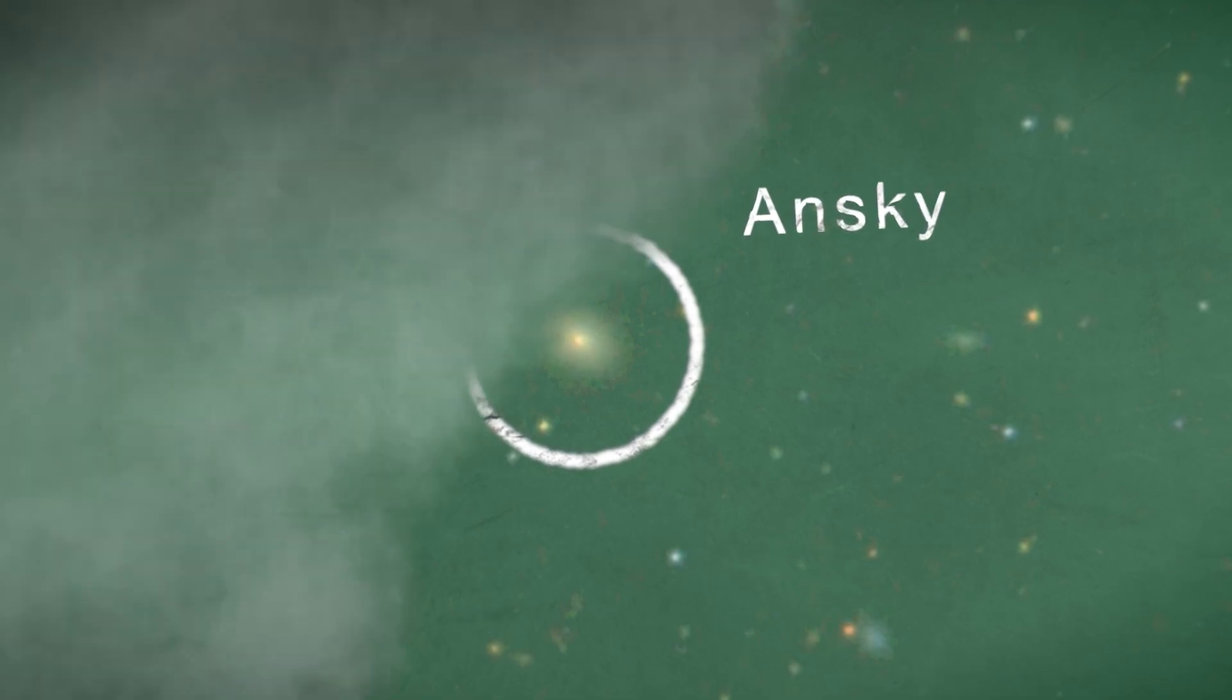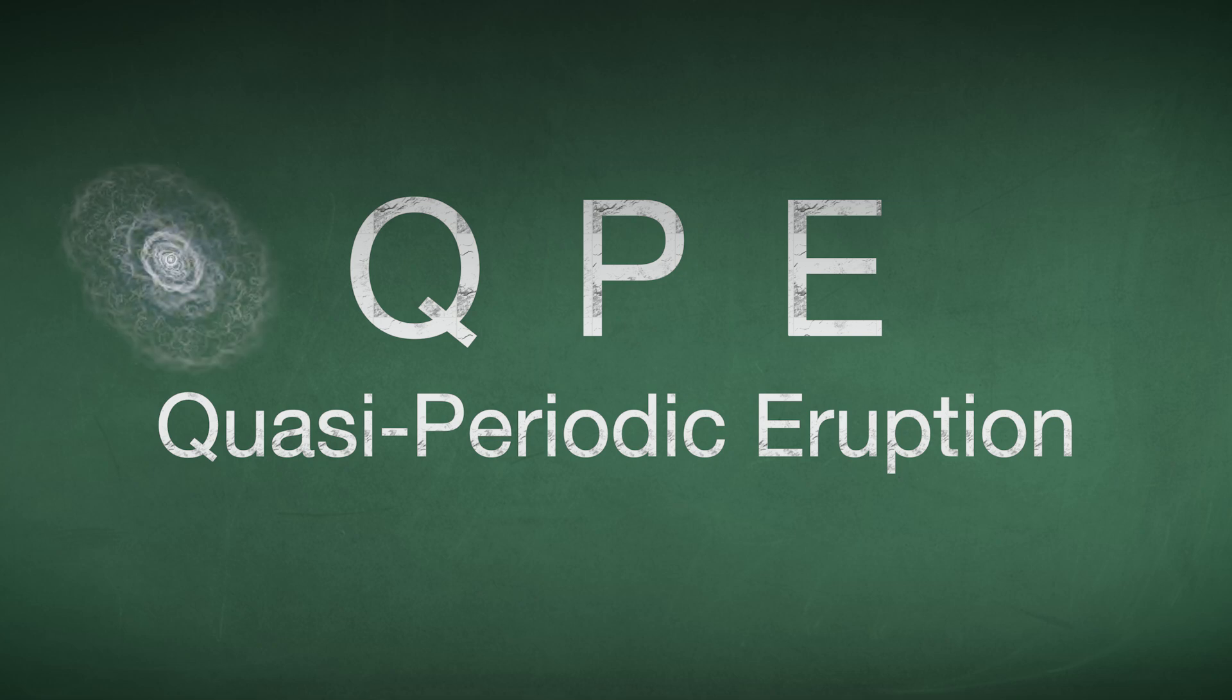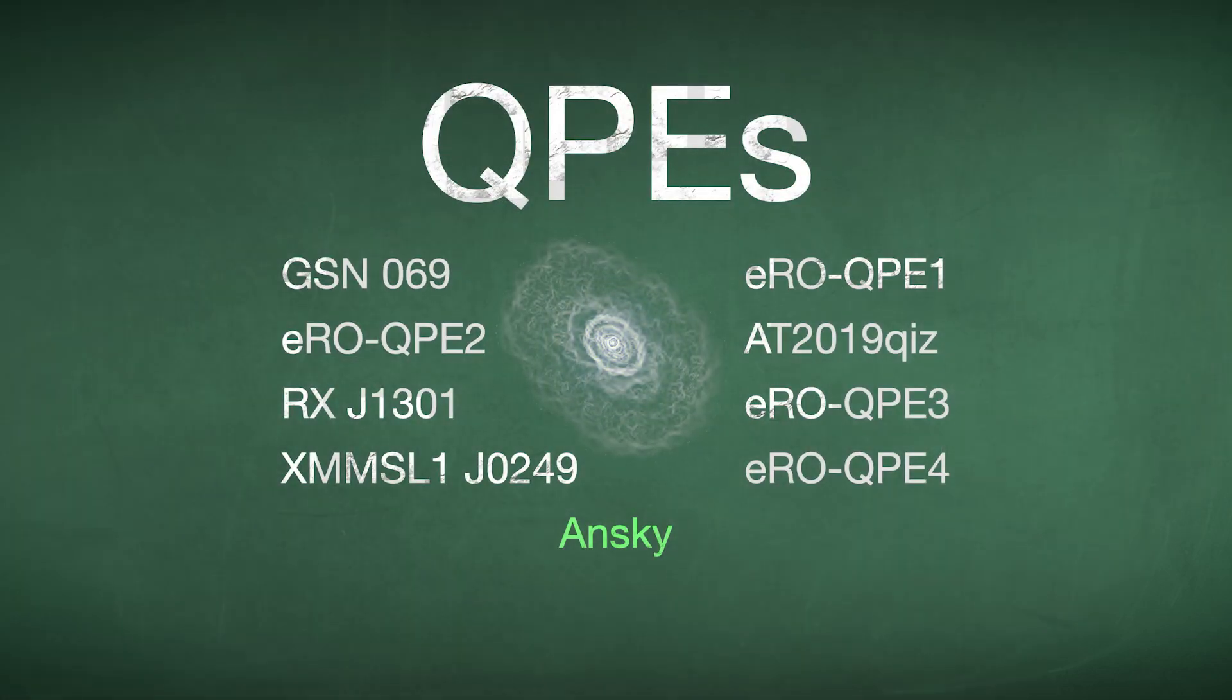ANSCE produces a type of recurring X-ray outburst called a QPE, or quasi-periodic eruption. These events were just recently discovered. ANSCE is only the eighth known QPE emitter and is the most energetic to date.